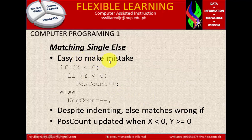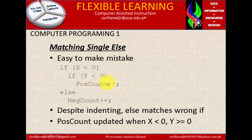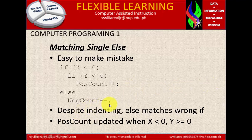Matching single else — easy to make a mistake. If x is less than 0, if y is less than 0, pos count increment (++). When you say pos count increment (++), it adds 1: 0 plus 1 is 1, 1 plus 1 is 2 — that is called increment. Two positive signs combined with a variable is increment. Two negative signs combined with a variable is decrement — subtract 1. Else, neg count ++. Despite indenting, else matches the wrong if — pos count is updated when x is less than 0 and y is greater than or equal to 0.